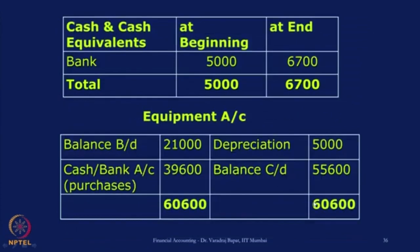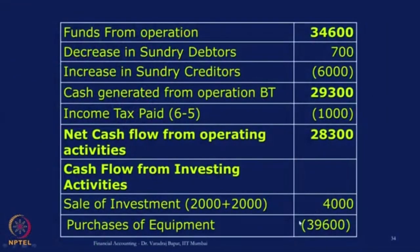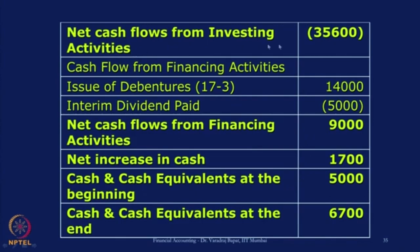I have also shown the equipment account here for those familiar with ledger accounts. The opening balance was 21,000, closing balance was 55,600, and reduction due to depreciation is 5,000. We don't know how much is the purchase, but the overall increase of 34,600 plus 5,000 means there was a purchase of 39,600. Either make a ledger account or a working note to arrive at 39,600 — it is in brackets because it is a cash outflow. So two items in investing: plus 4,000 and minus 39,600; net cash flow from investing activity is minus 35,600.